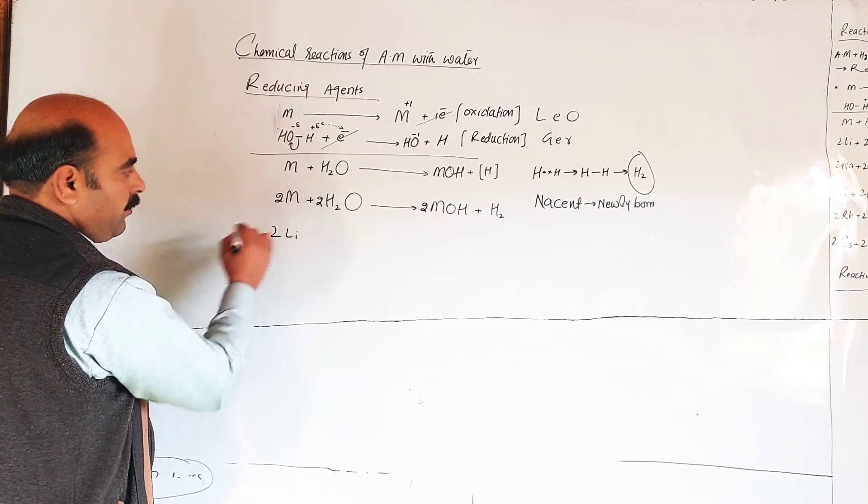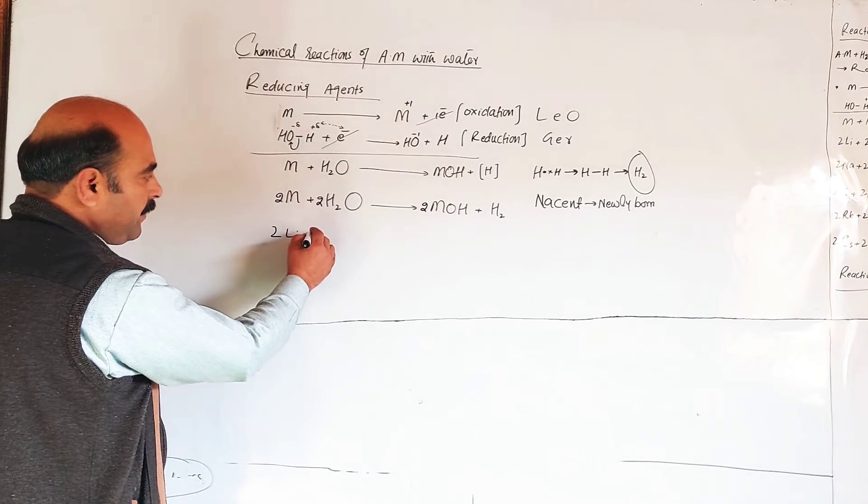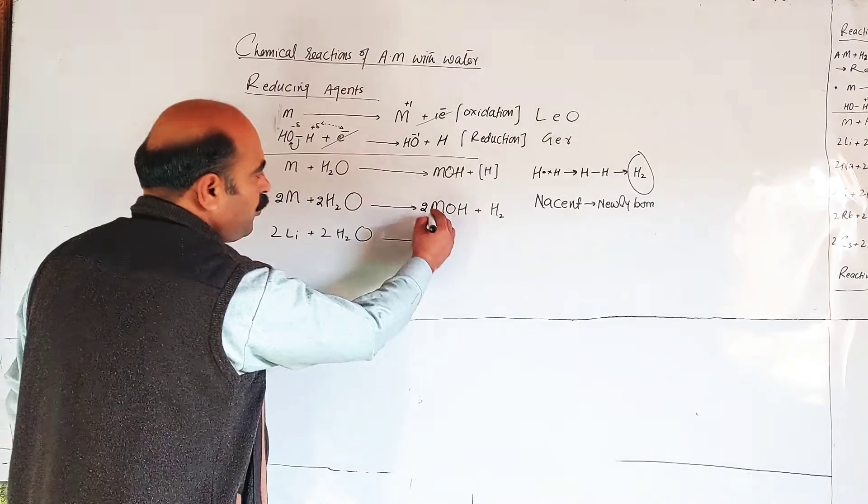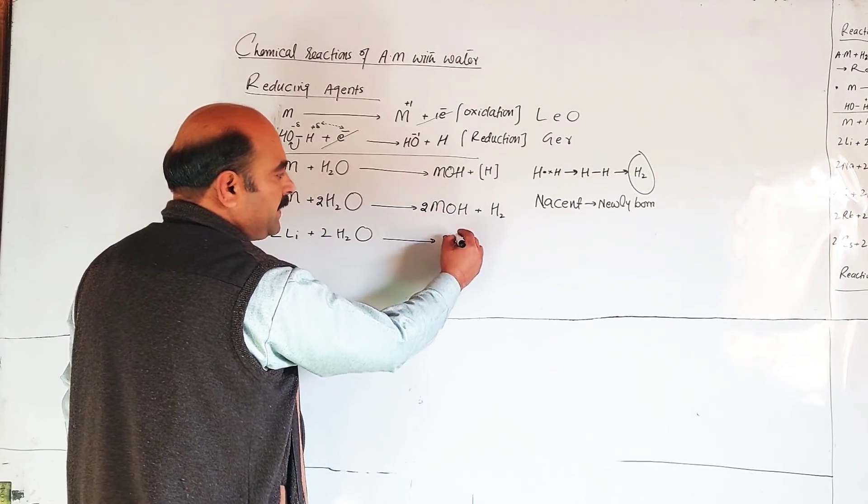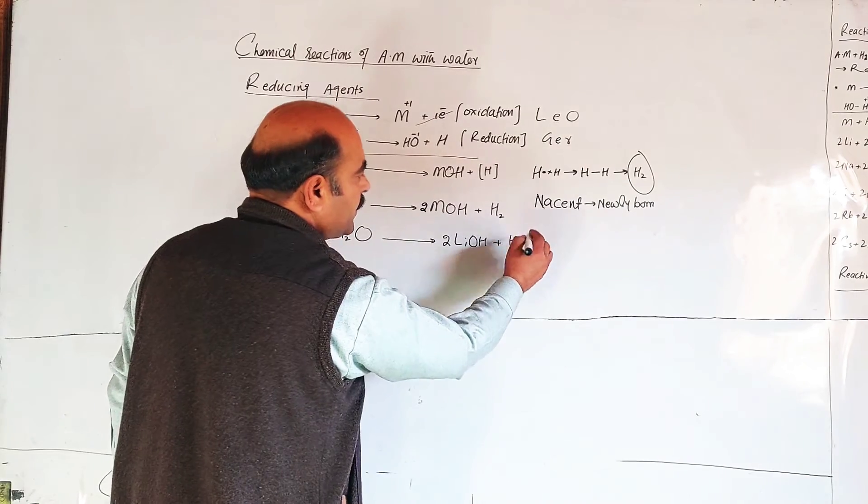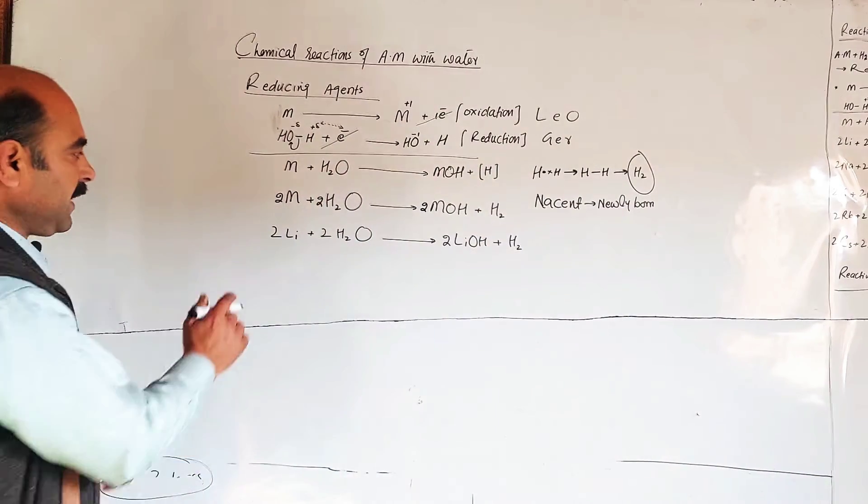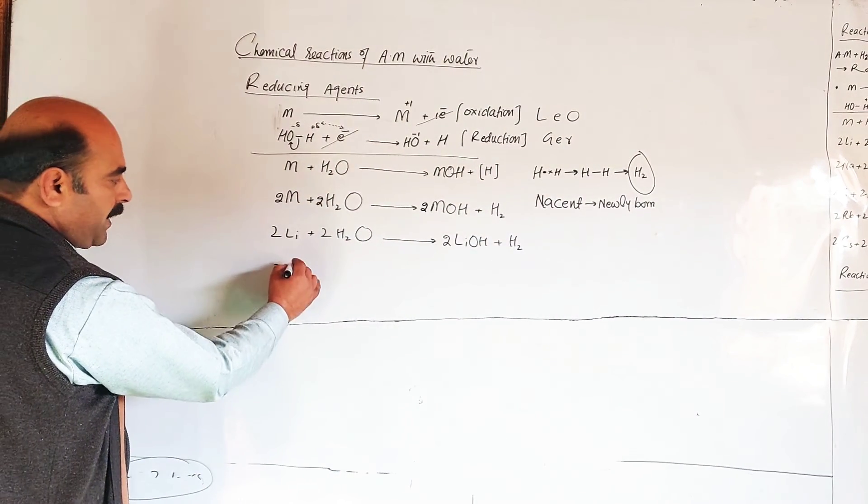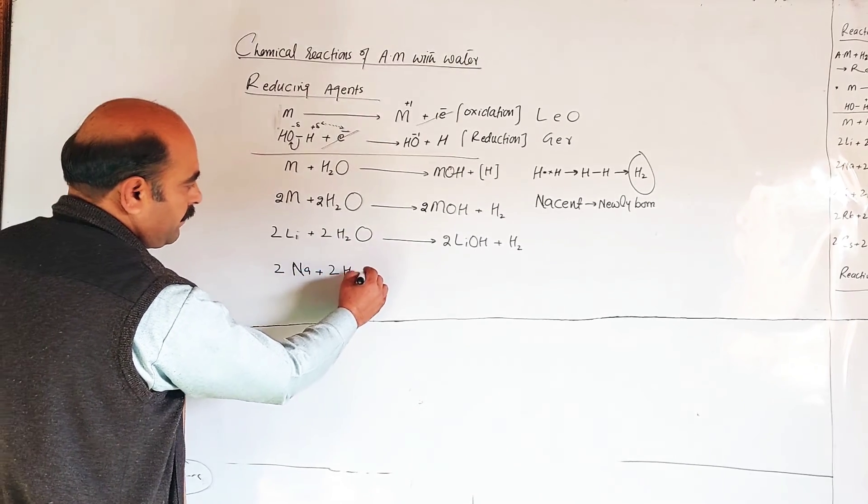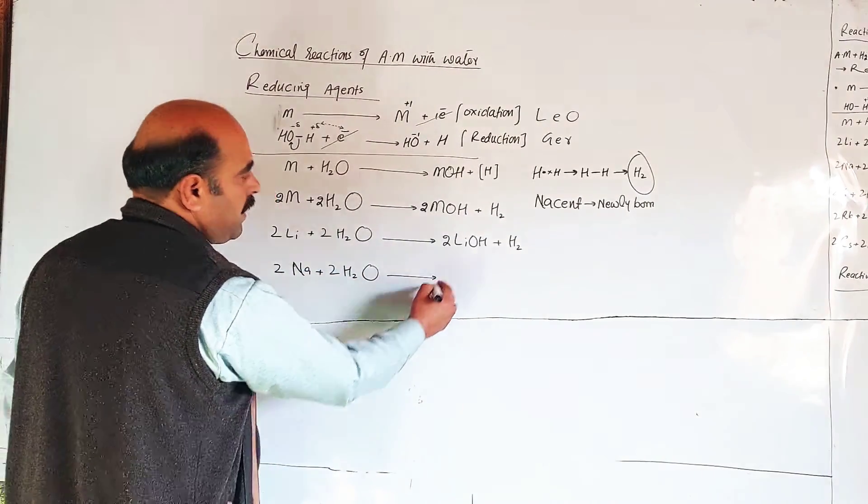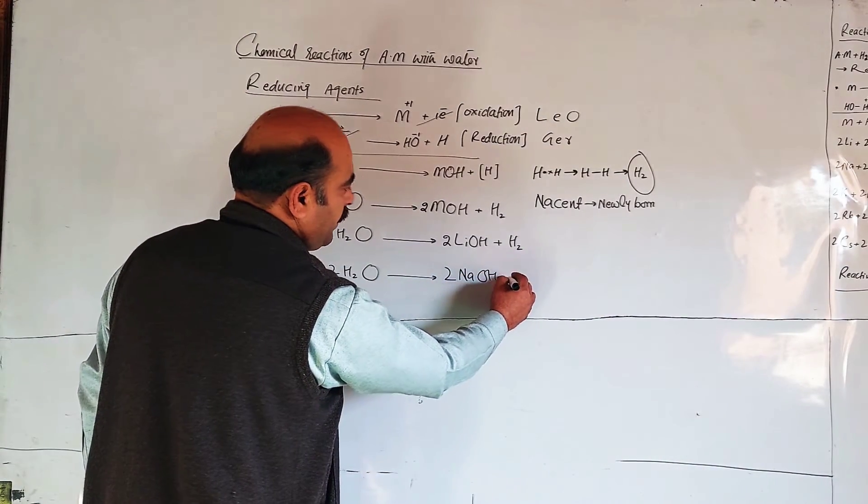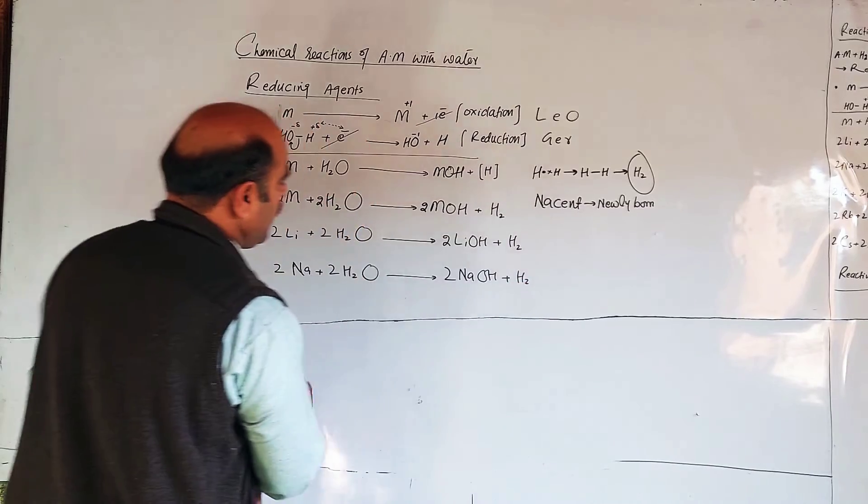Let's see specific examples. Two lithium plus two water forms lithium hydroxide and hydrogen. Only the symbol changes. Sodium plus water forms sodium hydroxide plus hydrogen.